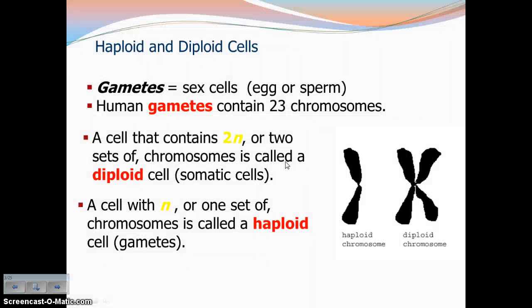You're going to hear me use the term gametes a lot today. Gametes are sex cells. So in humans, in males we're talking about sperm, in females eggs. Human gametes contain 23 chromosomes. Remember, every somatic cell in your body has 46 chromosomes. There's only one cell in your entire body that has a different number, and those are your sex cells — females: eggs, males: sperm. Those gametes have 23 chromosomes.